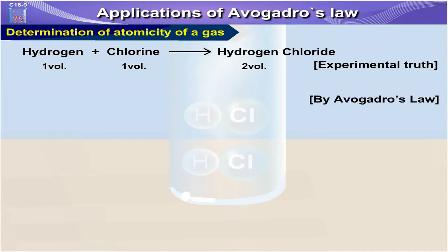Now by Avogadro's Law you can say that one molecule of hydrogen plus one molecule of chlorine gives two molecules of hydrogen chloride.